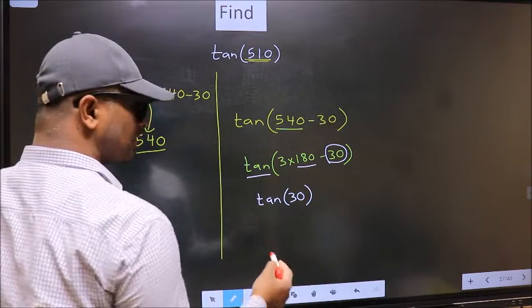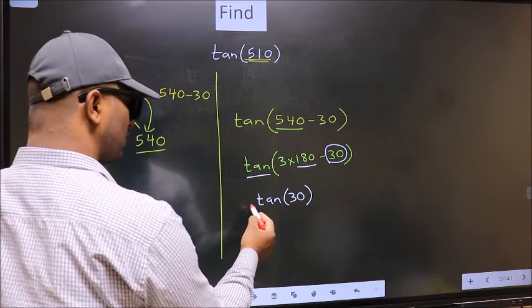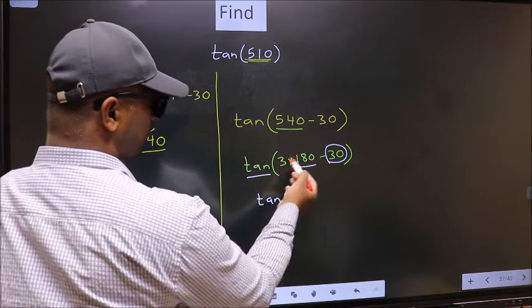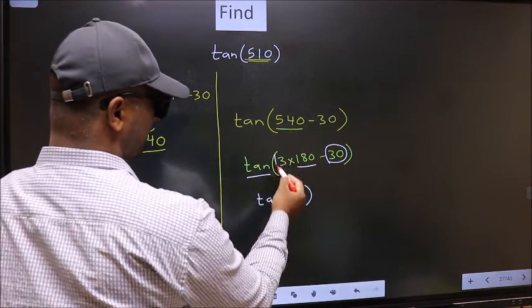Now the question is, will we get here plus or minus? To answer that, we should look at the number before 180. That is 3.